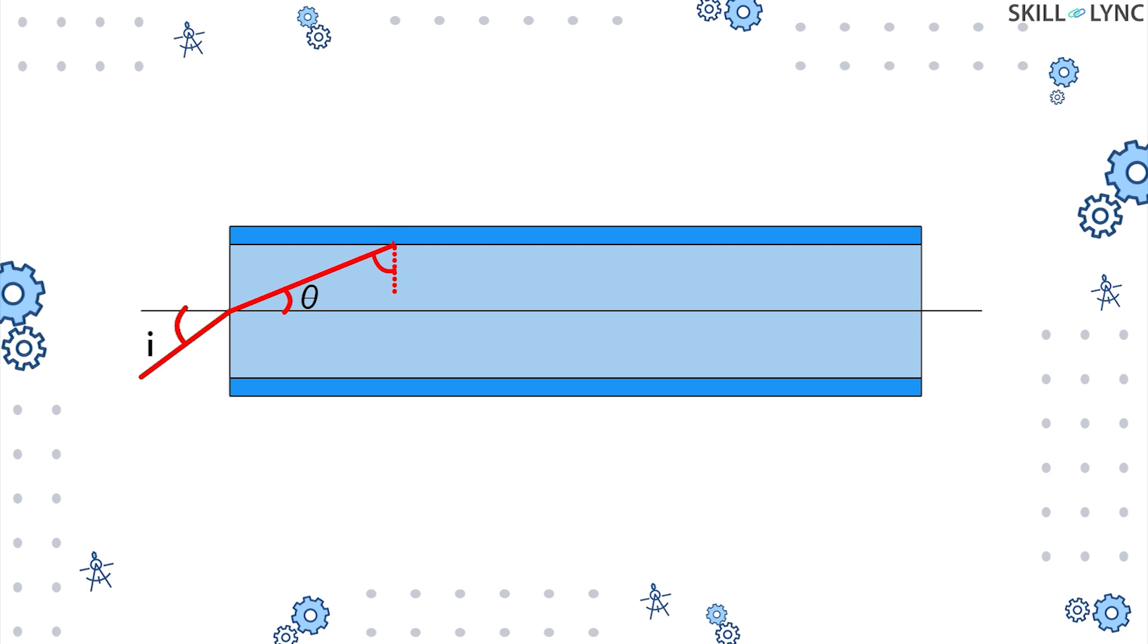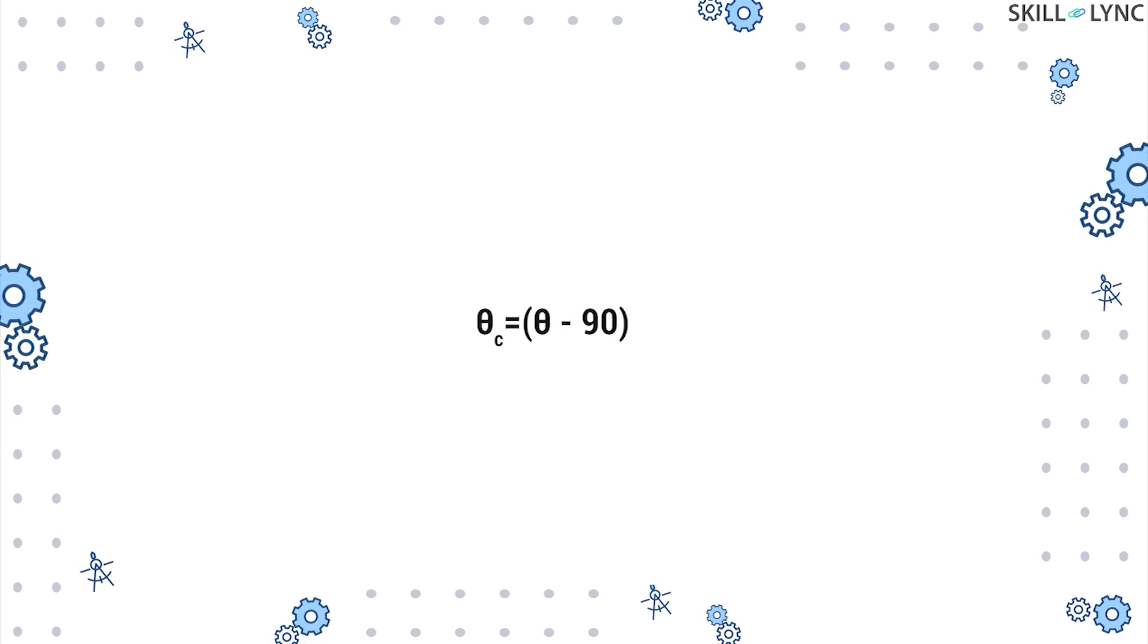Now let's consider a ray that is incident at an angle i at the core. This ray gets refracted from the core surface and makes an angle θ. The ray is then incident on the core-cladding surface at an angle θc. This angle θc is given by θc = θ - 90°.